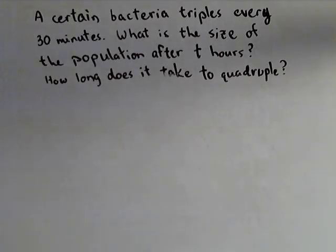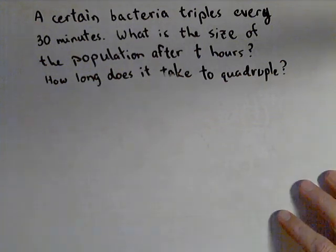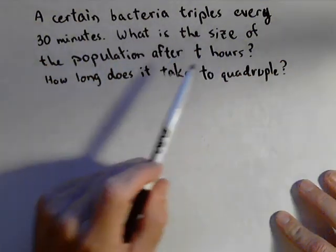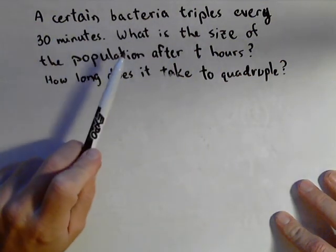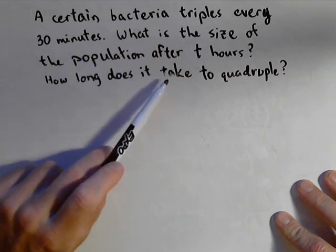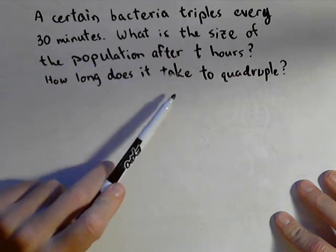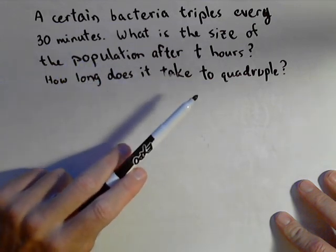Here we have an exponential model problem with a couple of small wrinkles. We have a certain bacteria that triples every 30 minutes. What is the size of the population after t hours? How long does it take to quadruple?